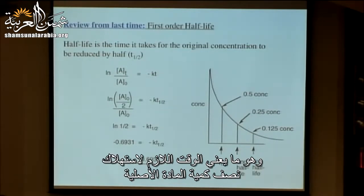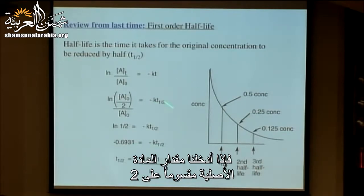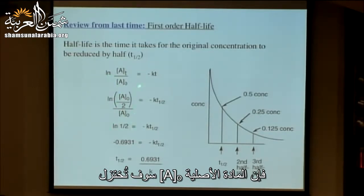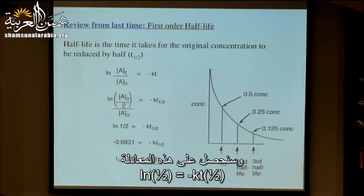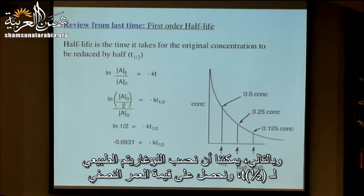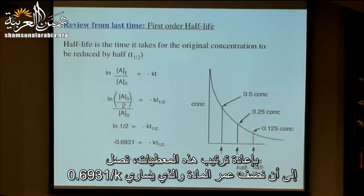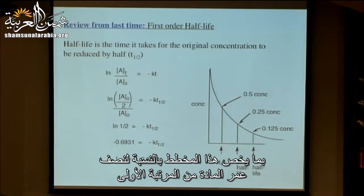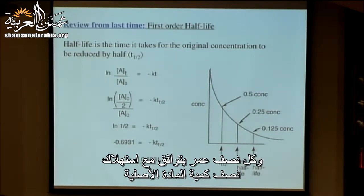The first-order integrated rate law gives us the half-life, defined as the time it takes for half of the original material to go away, abbreviated t-half. If you plug in the original material divided by 2, the original concentration A-zero drops out, giving the equation: the natural log of one-half equals minus k times t-half. Rearranging, you get half-life equals 0.6931 over k.